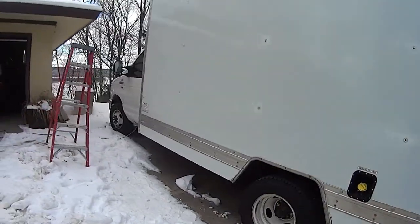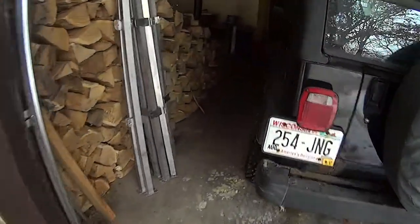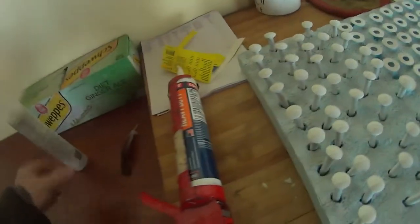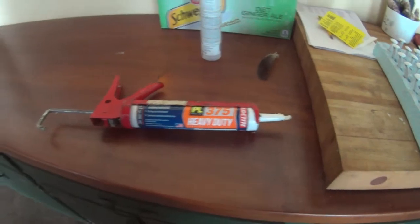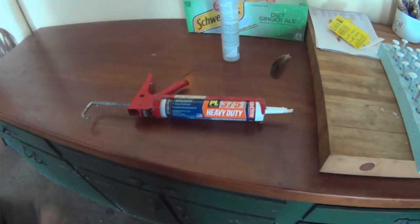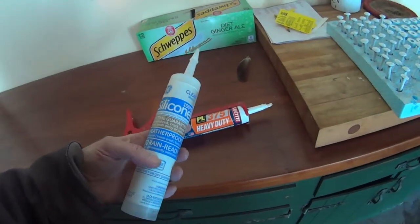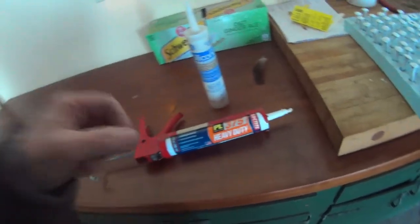So, let's go back in. I'll show you the adhesive. The plan is to use this adhesive. It is PL375. Use this to bond the 2x2s and the 2x4s to the inside of the box truck. And then the bolts themselves. From the outside, I'm going to seal up with a little bit of silicone sealer. So, that's the plan.